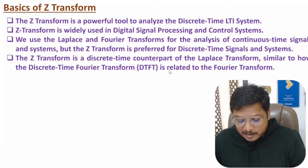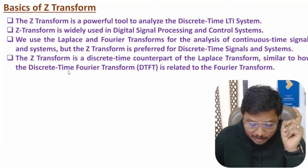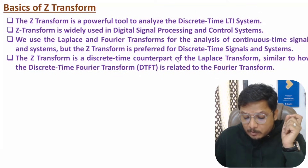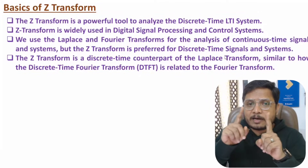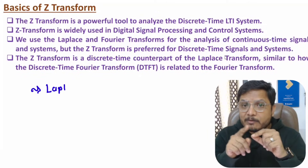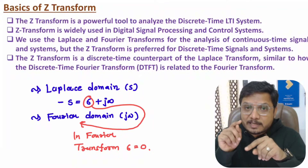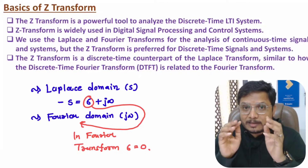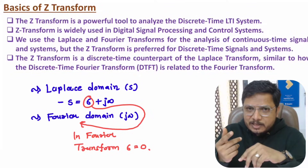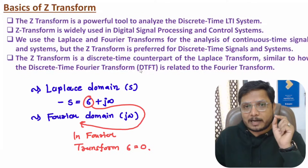Z-transform is a discrete time counterpart of Laplace transform, similar to how discrete time Fourier transform is related with Fourier transform. Laplace transform and Fourier transform are directly related: in Laplace transform s = sigma + j*omega, while in Fourier transform we just have j*omega with sigma equals zero.